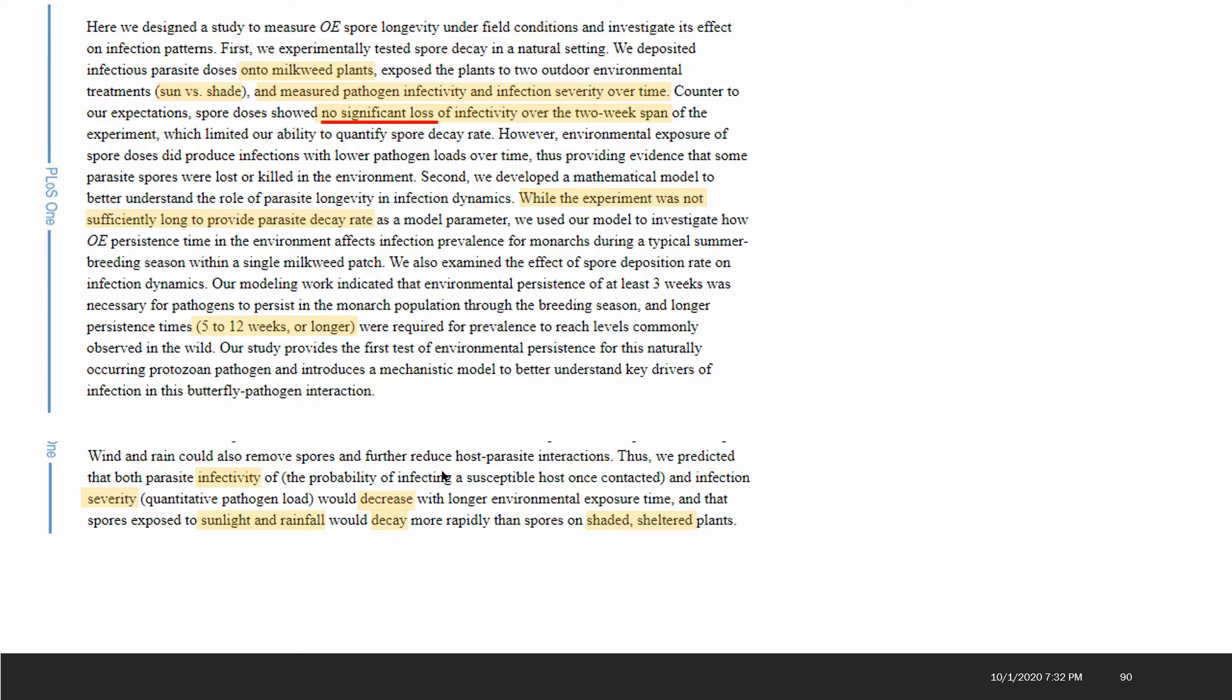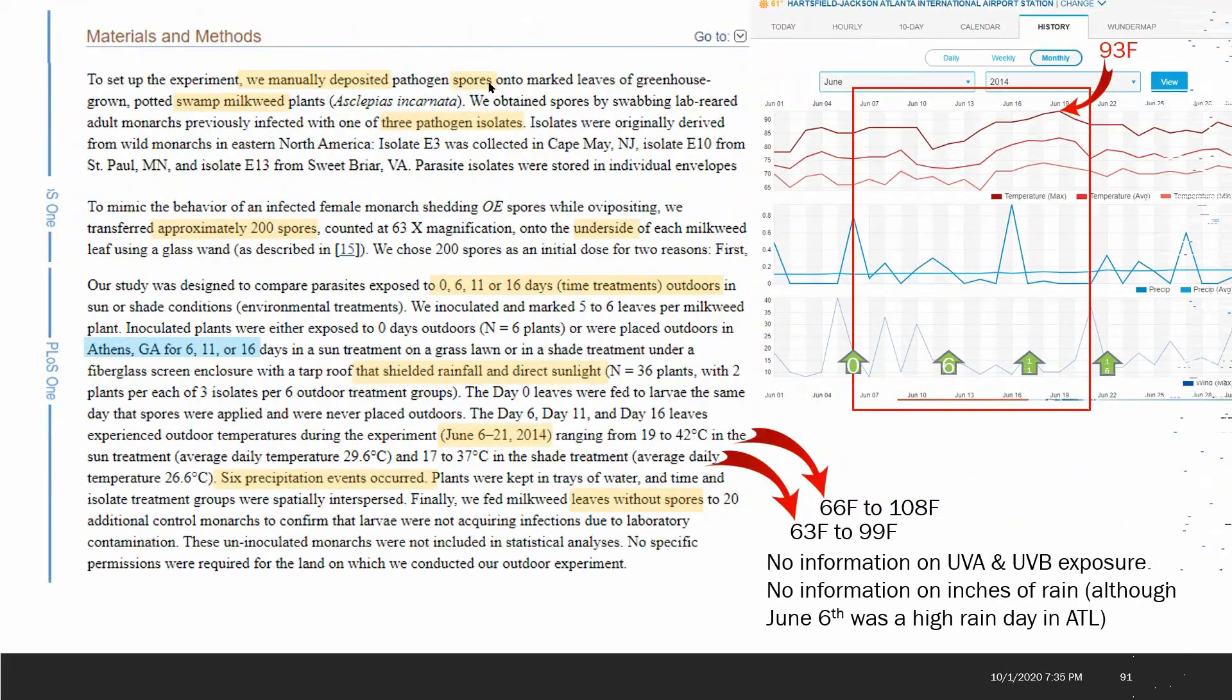There's two assumptions here: the parasite infectivity, which is true/false whether the caterpillar gets infected, and the infection severity which is more of an analog value would decrease with longer environmental exposure over time, and that spores exposed to sunlight and rainfall would decay more rapidly than spores shaded on sheltered plants. So those are the two scenarios: the shaded scenario is also sheltered and the sunlight scenario is also exposed to rainfall. The spores were manually deposited on some potted swamp milkweed.